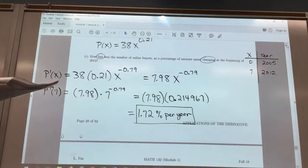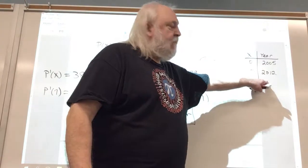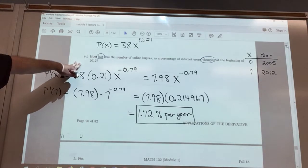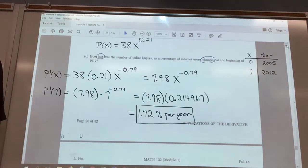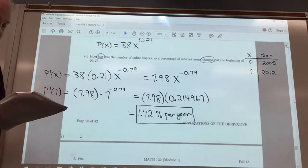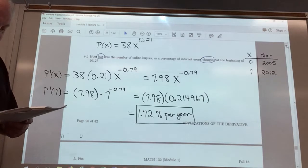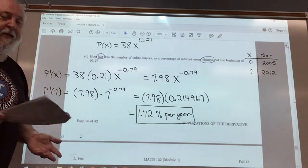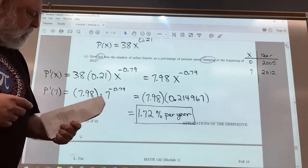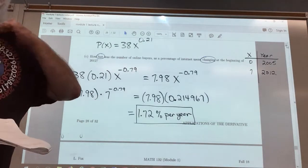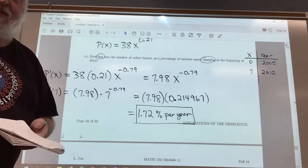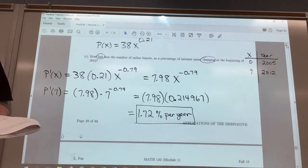So we calculated the average rate of change from 2005 to 2012 in part B, and the instantaneous rate of change at the beginning of 2012 in part C — that's the difference between average rate of change and instantaneous rate of change. Example 4 is similar in idea to example 3. I will post my answers to example 4 on Moodle. If you have any questions, don't hesitate to email me or come see me during my office hours.